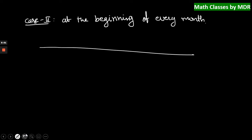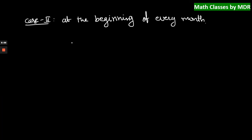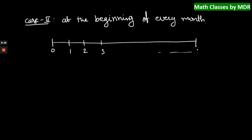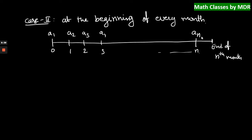For Case 2, let us draw a timeline: 0, 1, 2, 3, up to the nth month. The deposits happen at the beginning of every month, so A1 starts from position 0 — the beginning of the first month — and An is the amount deposited at the beginning of the nth month. So we know A1 is X, then X into (1+i), and so on, up to X into (1+i)^(n-1). This also forms a geometric series.